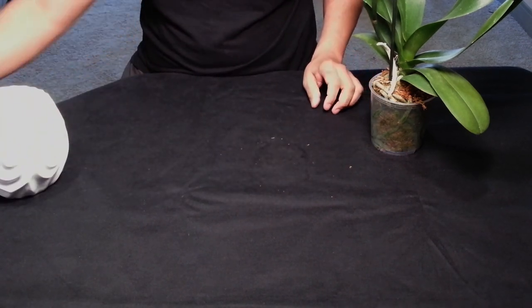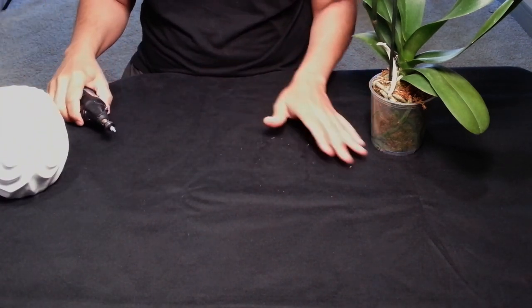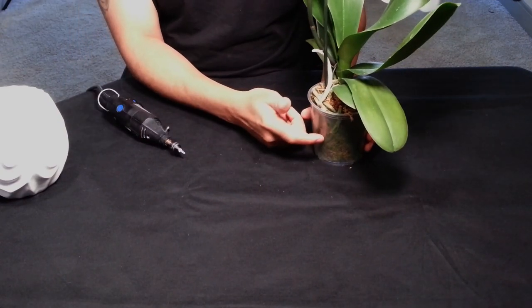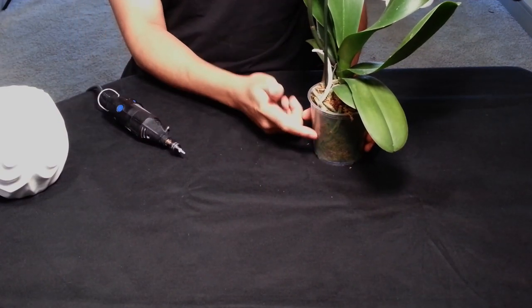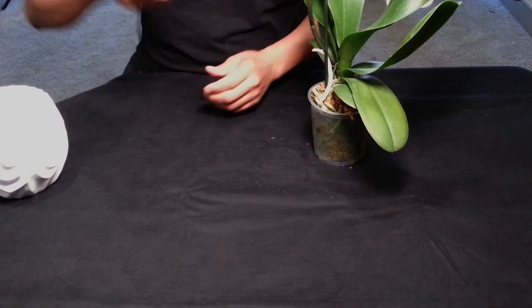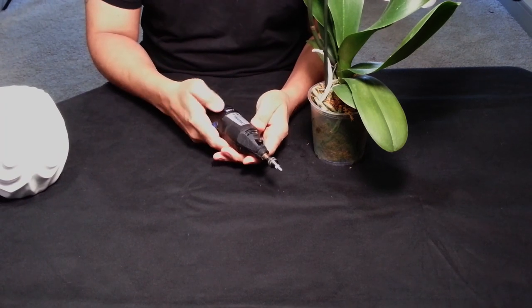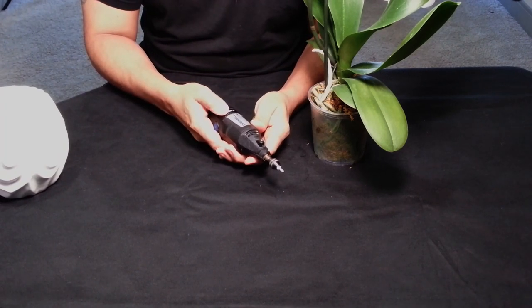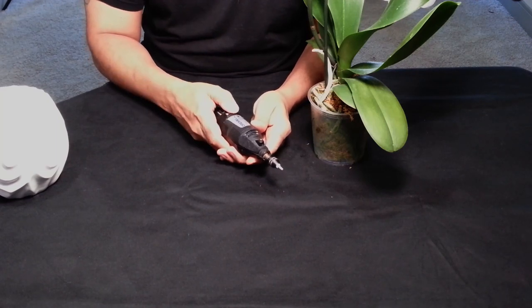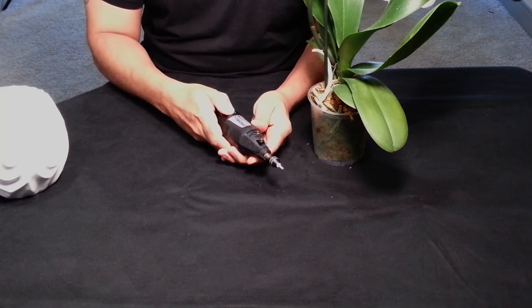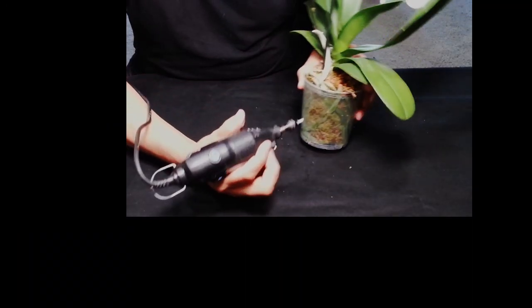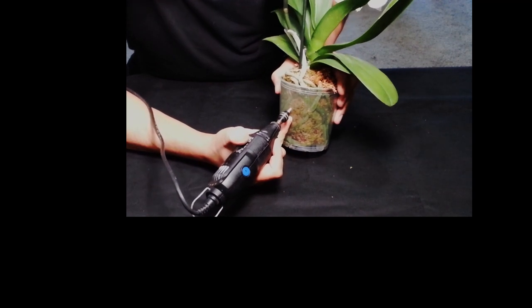Now, with that out the way, the next thing we're going to do is we're going to get some holes in here. I'm trying to show you two different ways of doing this. So the first way is the easiest. If you have yourself a Dremel, and I hope this doesn't get too loud, I am going to take a Dremel and I'm going to look at the roots. And I'm just going to start to put some holes here.